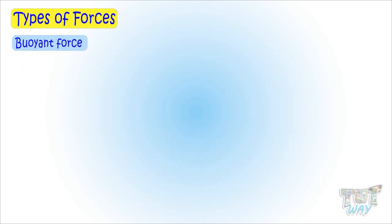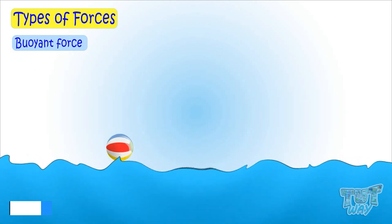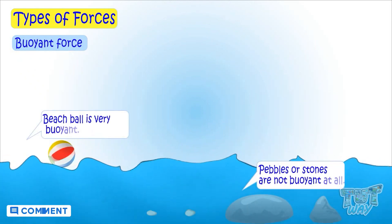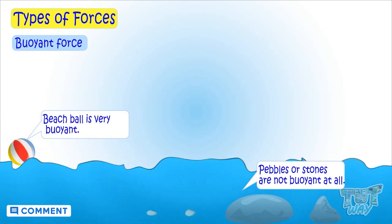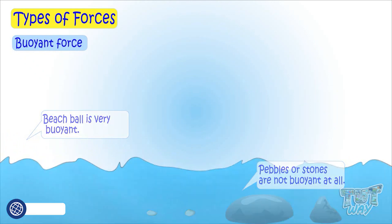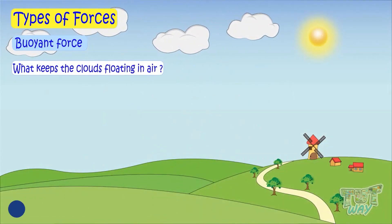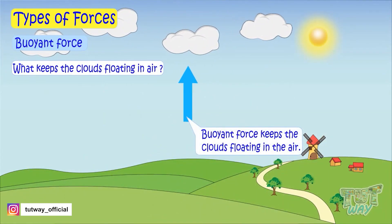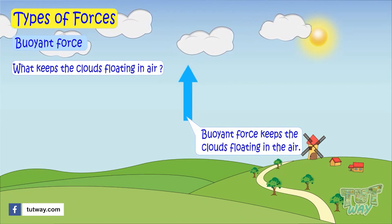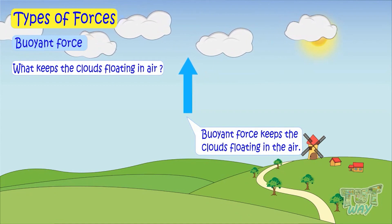Some objects, like a beach ball, are very buoyant, while some others, like pebbles and stones, are not buoyant at all — they just cannot float. Kids, do you know what keeps the clouds floating in the air? It's the buoyant force that keeps the clouds floating in the air. You'll read more on it in your next grades.